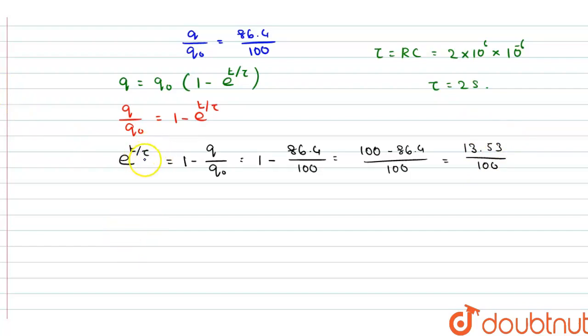Now, put the value of tau is equal to 2. Therefore, we get - sorry I missed the minus sign here. So, this minus here, therefore e to the power minus t by 2 is equal to 13.53 divided by 100. Now, take the reciprocal.